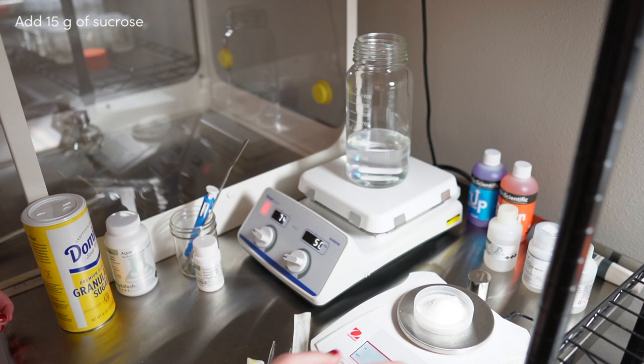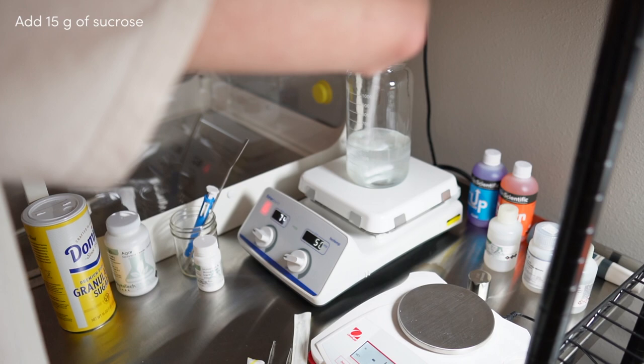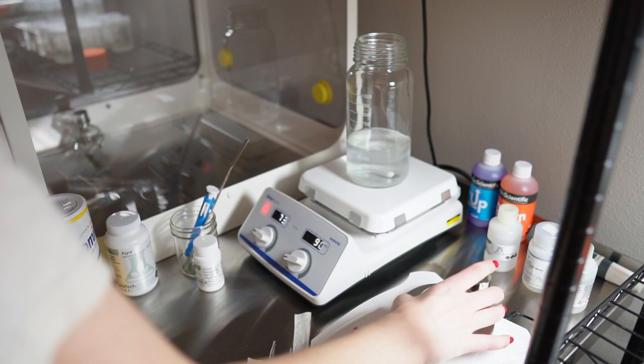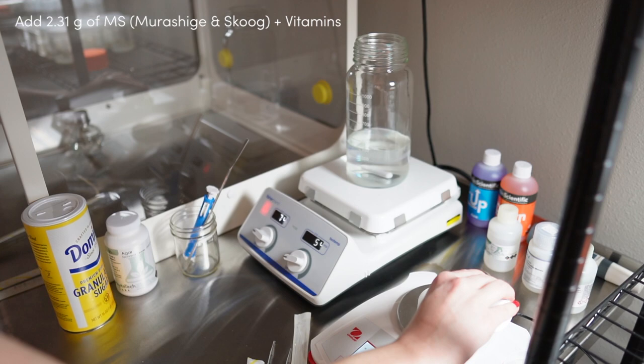I also add 15 grams of sucrose. Again, if you're making a full liter, just double it. I also recommend getting a hot plate or magnetic stirrer like the one that I have in this video. It's really hard to get these ingredients to combine properly without a heat element to it.